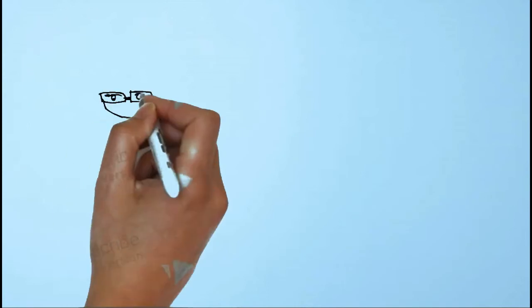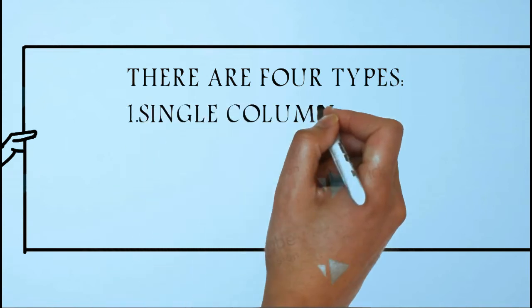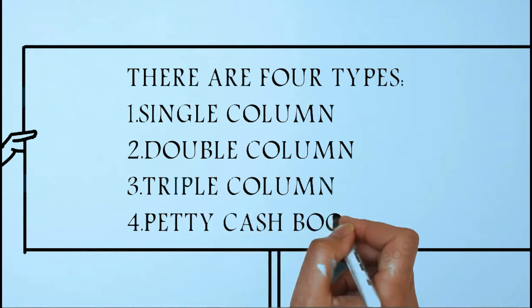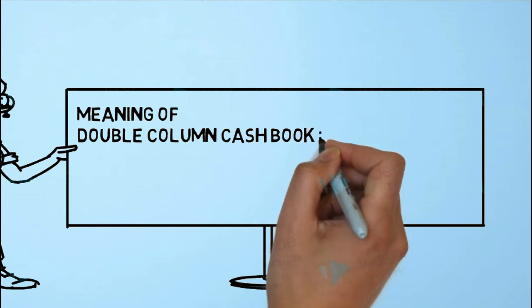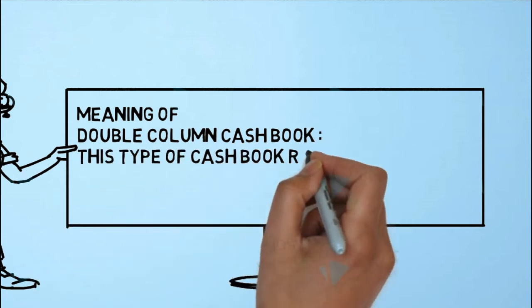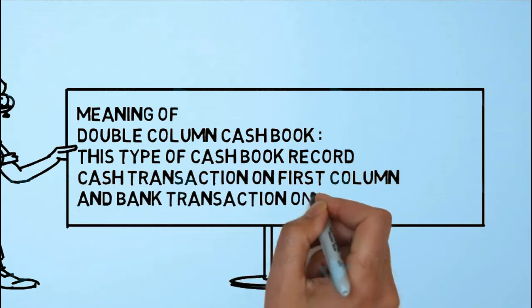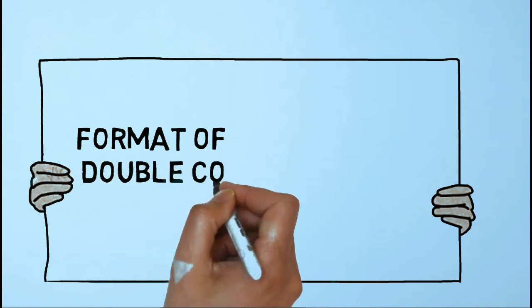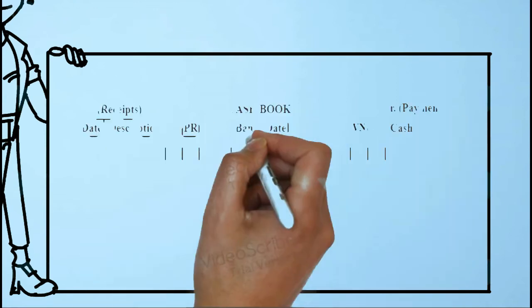Now let's study the types of cash book. Cash books are of four types, they are as follows: first, single column; second, double column; third, triple column. The double column type of cash book records cash transactions in the first column and bank transactions in the second column.